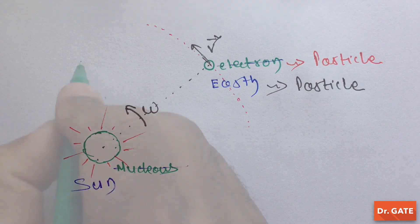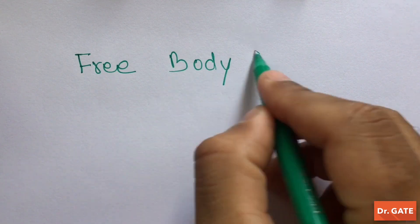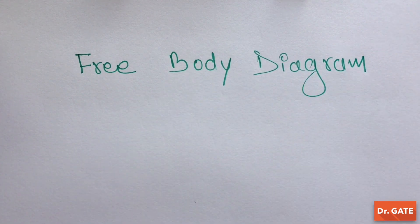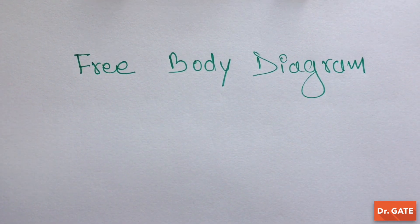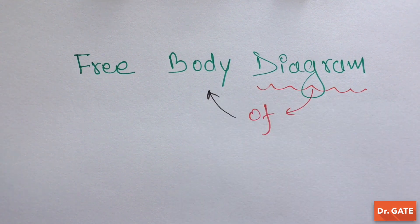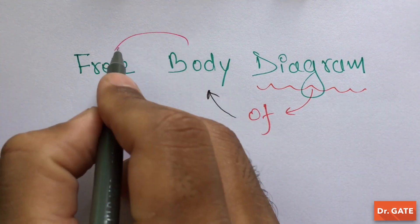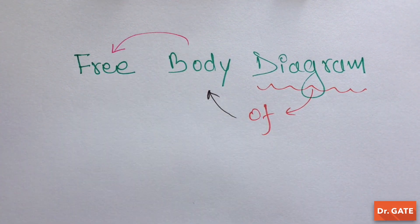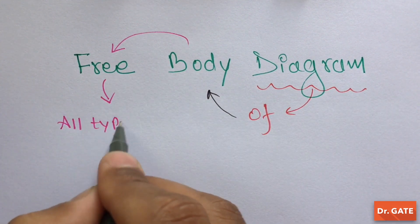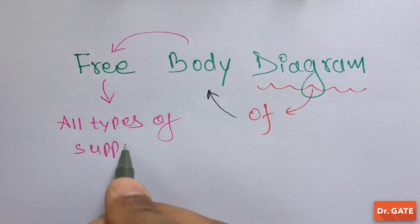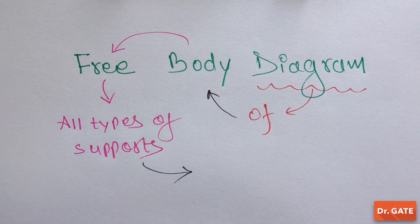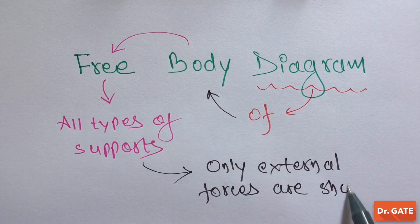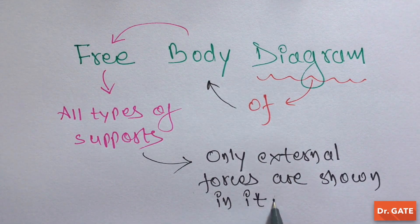Now come to the free body diagram. It is basically a diagram of a body when it is freed from all types of supports, and only external forces are shown in it.